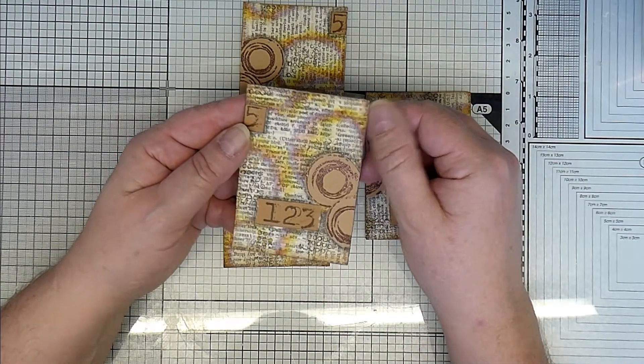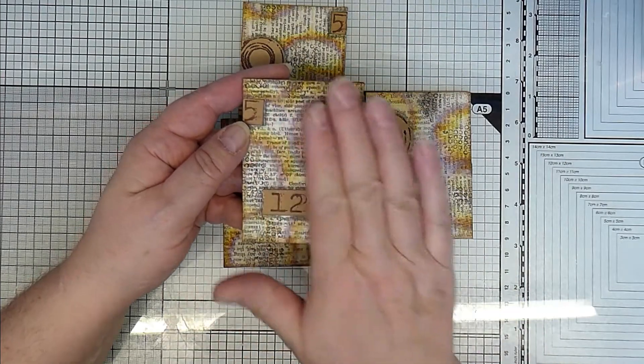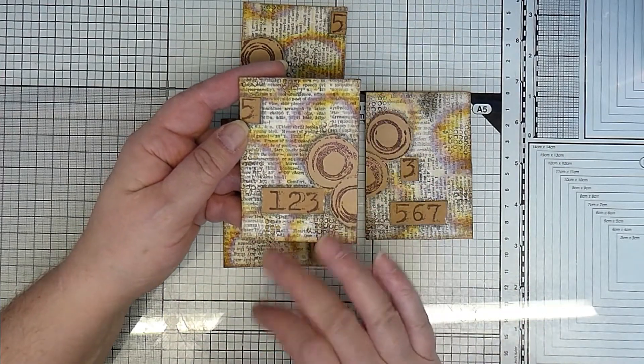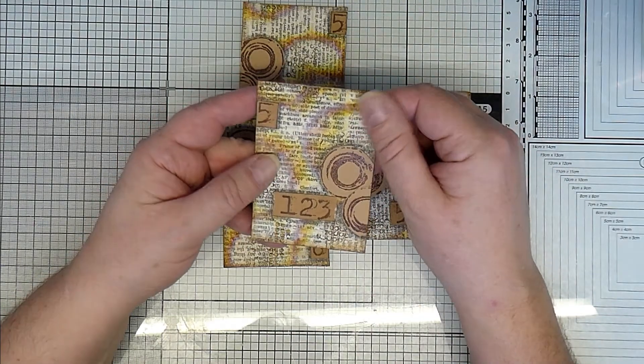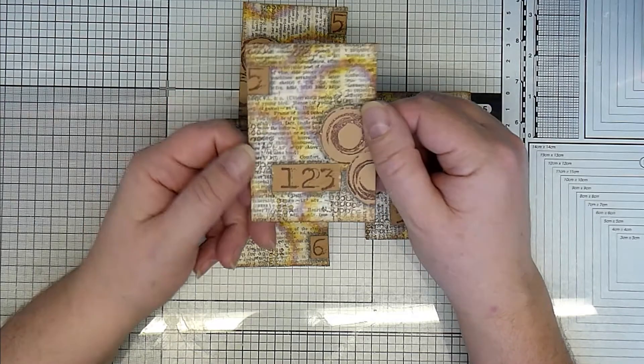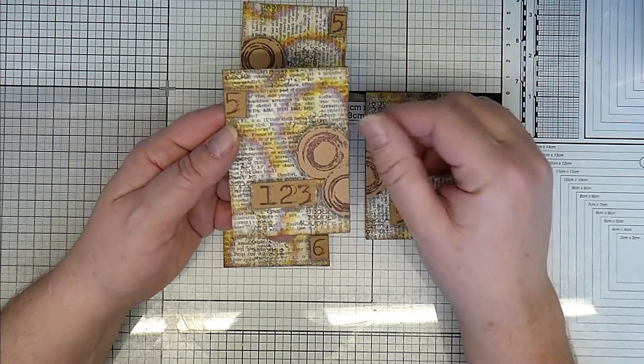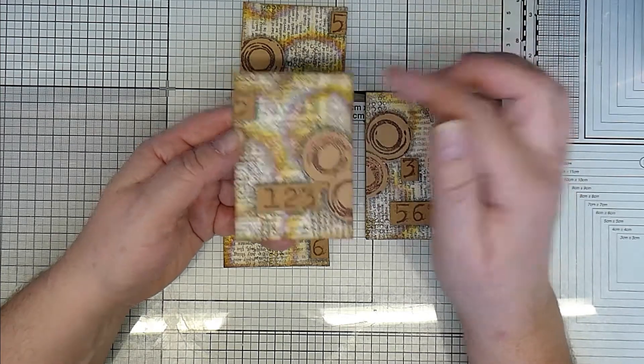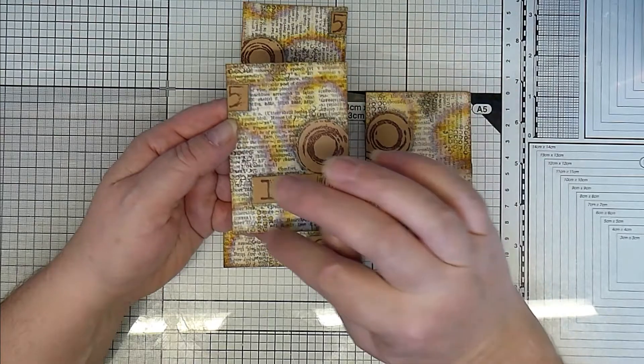I applied that with decoupage glue, just putting the glue on and then patting the tissue onto it. I didn't brush a lot because I didn't want to rip the tissue, because it is very fragile. But once you've used it once, you'll get used to how delicate it is.